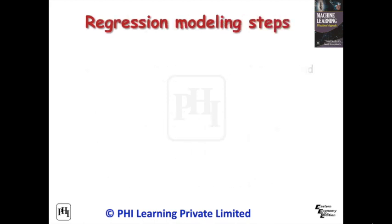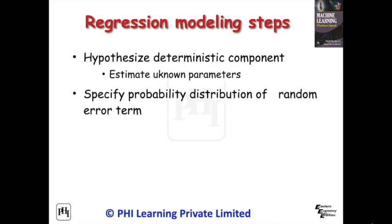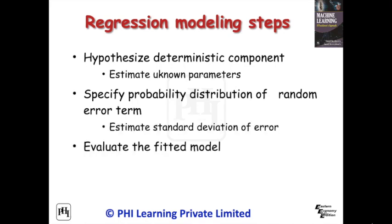Regression analysis consists of more than just fitting a linear line through a cloud of data points. It consists of three stages: one, analyzing the correlation and directionality of the data; two, estimating the model, i.e., fitting the line; and three, evaluating the validity and usefulness of the model.